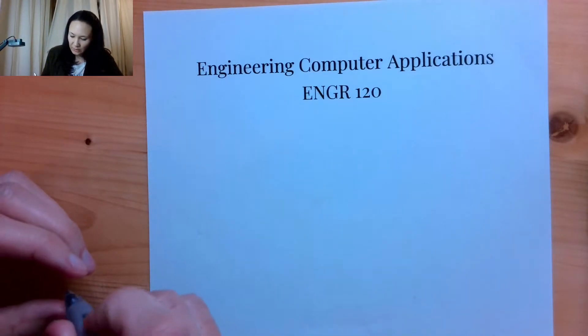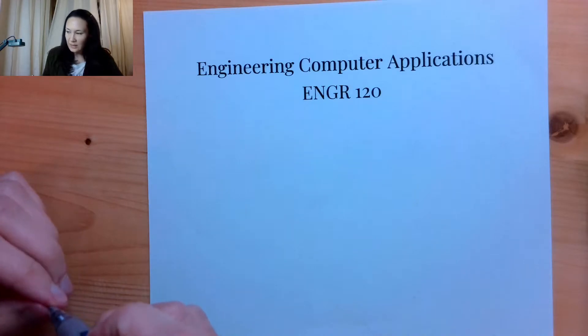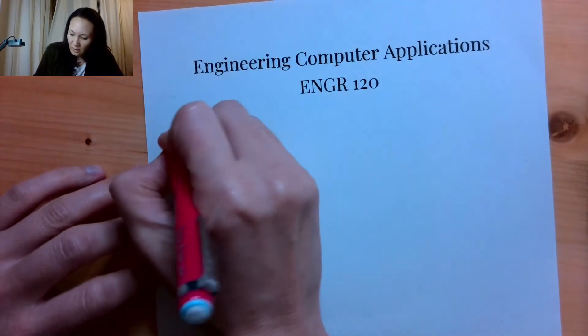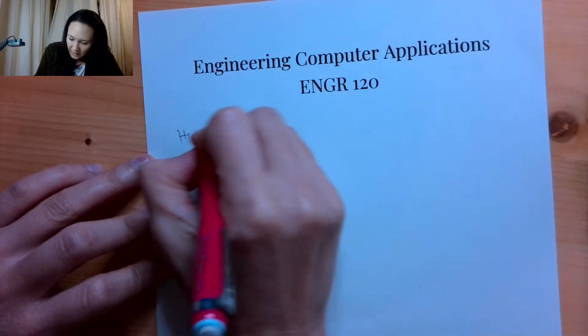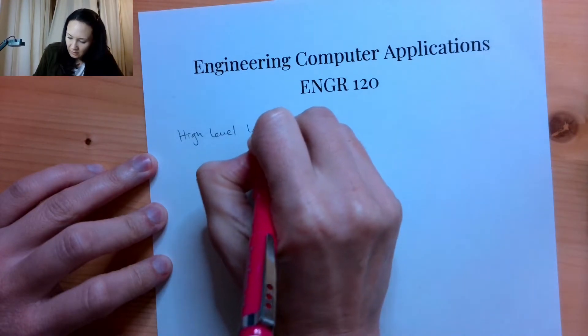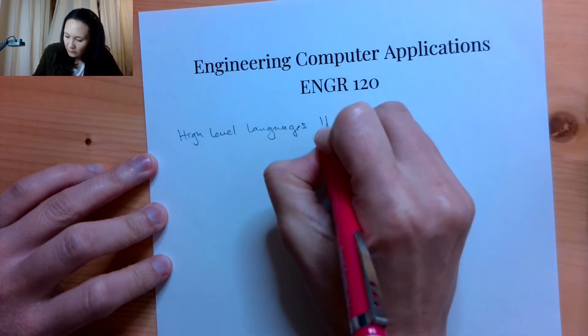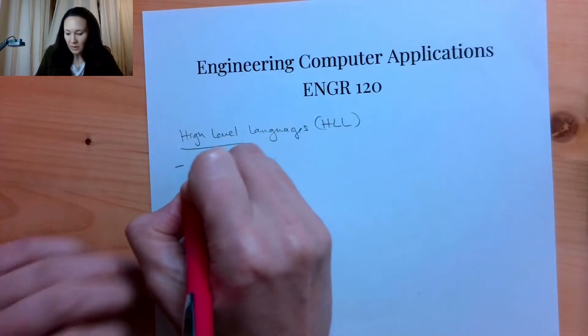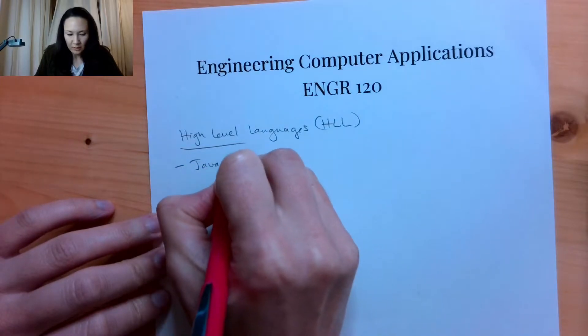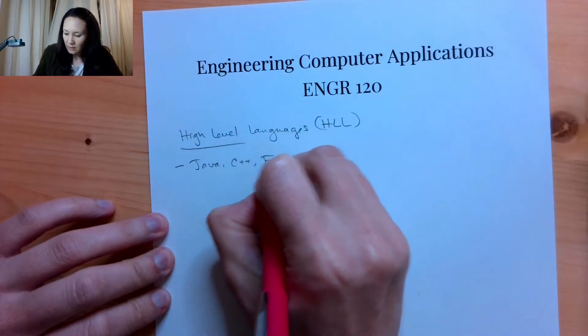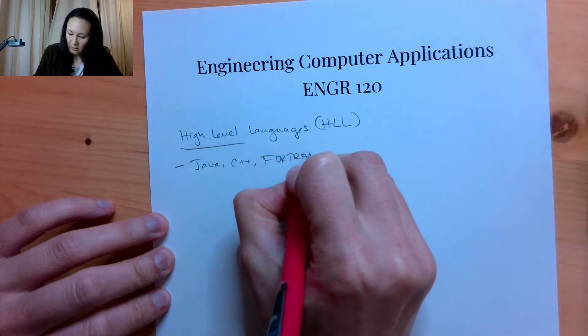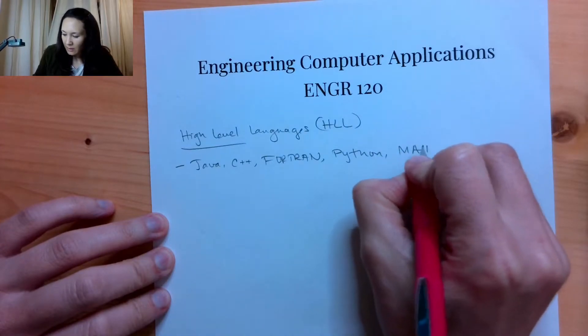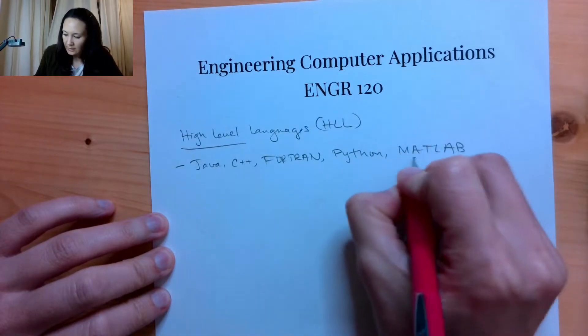As far as programming languages go, there are high-level languages and low-level languages, and MATLAB is actually a high-level language. High-level languages, abbreviated HLL. Some examples are Java, C++, Fortran, and Python, and MATLAB. So this course is in MATLAB.